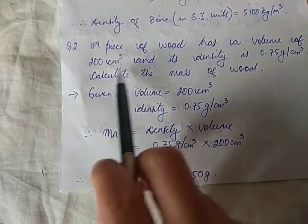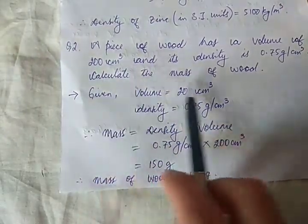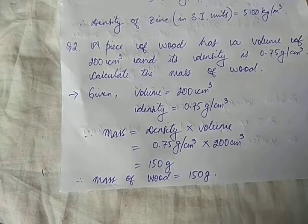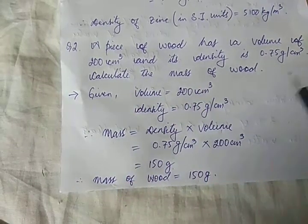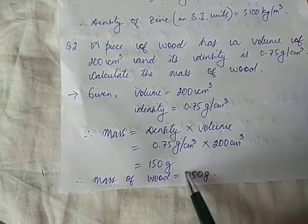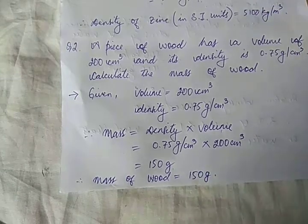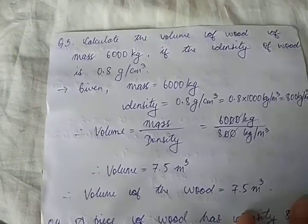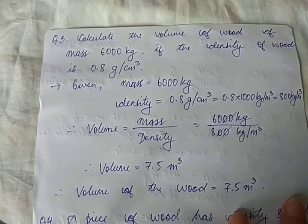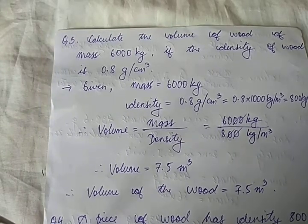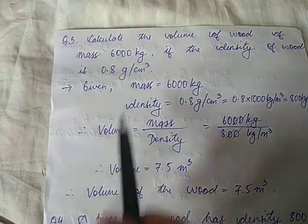Since the question only says calculate the mass of the wood, we stop here. If it asked for SI units, you would convert 150 grams to kilograms. Now, Problem 3 is about volume: in Problem 1 we found density, in Problem 2 we found mass, now we find volume.